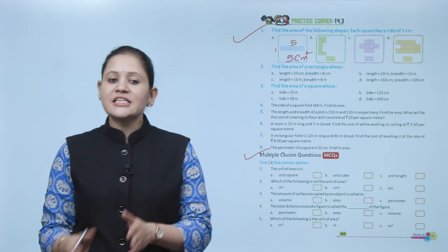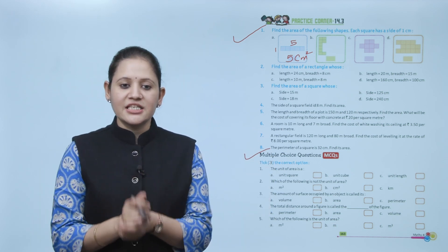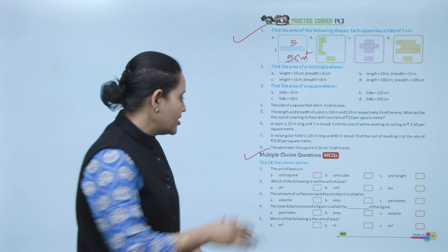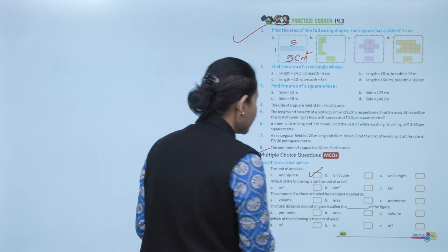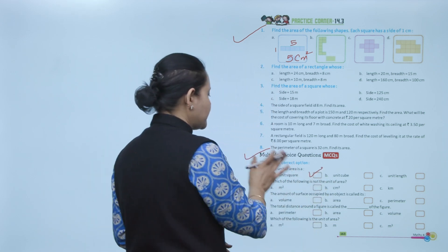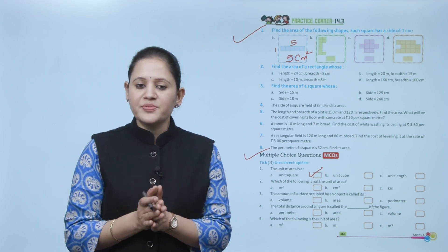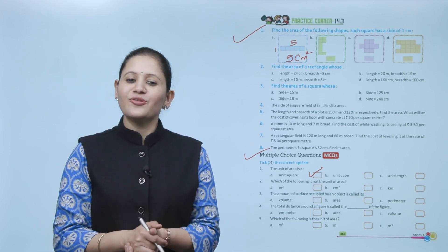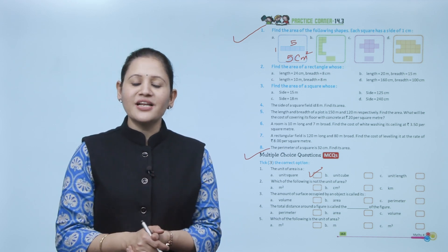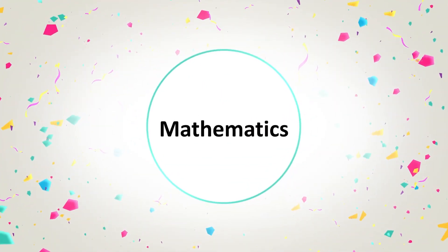Multiple choice question: the unit of area is unit square — area is always expressed in square units, so option A is the correct answer. Here we end the chapter. I hope you understand it well. Allow yourself to practice it.